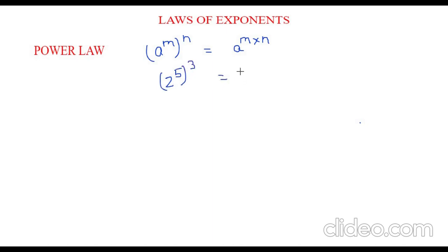So this can be written as 2 to the power of 5 times 2 to the power of 5 times 2 to the power of 5.